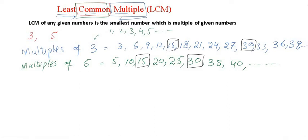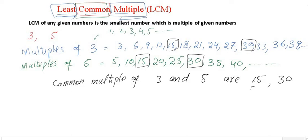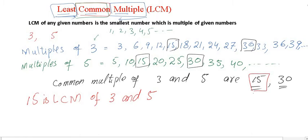We found the multiples, then we found the common multiples, and now the last step is to find the 'least'. The common multiples of 3 and 5 are 15 and 30. Since we need the least common multiple, 15 is the least common multiple of 3 and 5.